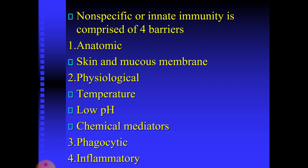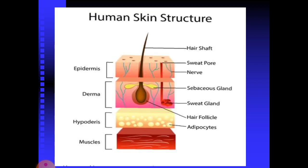This innate immunity is comprised of four barriers: anatomic barriers, physiological barriers, phagocytic barriers, and inflammatory barriers. Anatomic barriers, also known as physical barriers, tend to prevent the entry of pathogens — the organism's first line of defense against infection. Skin and the surface of mucous membranes are included in this category because they are effective barriers to the entry of most microorganisms.